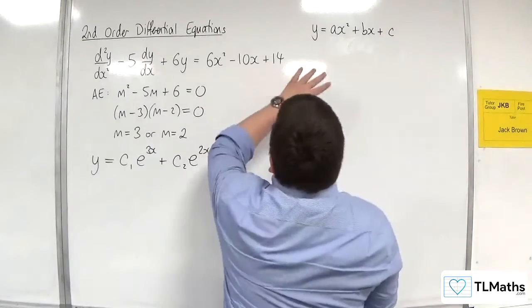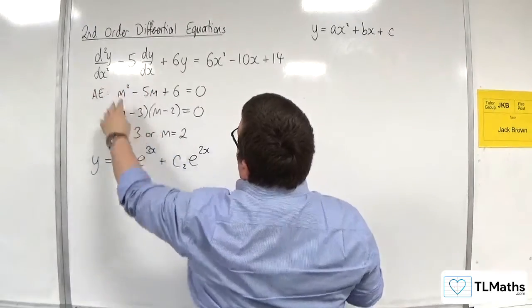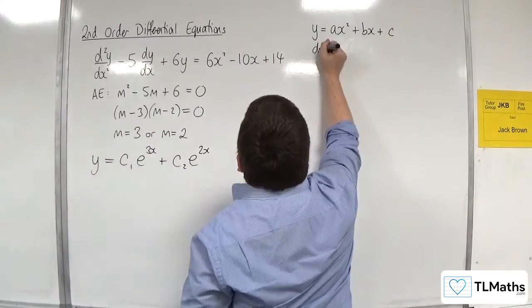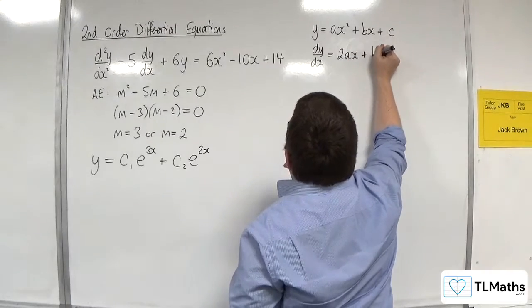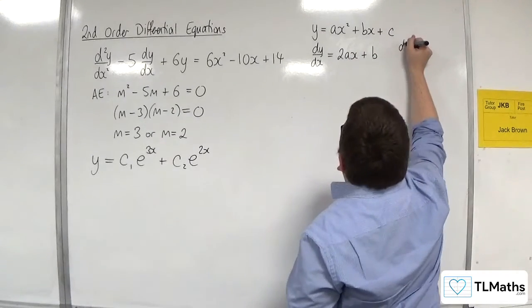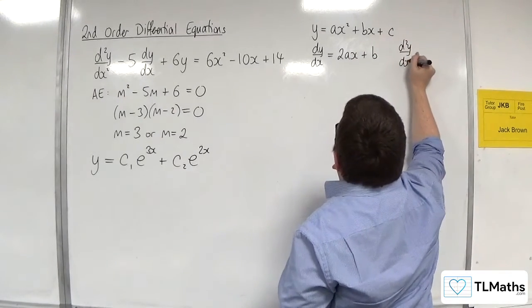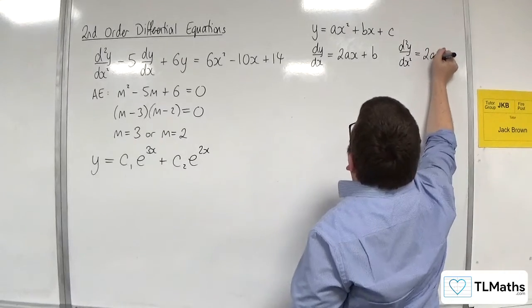Now, in order to substitute it in, I'm going to have to find dy/dx and d²y/dx². So dy/dx would be equal to 2ax plus b, and the second derivative would be equal to 2a.